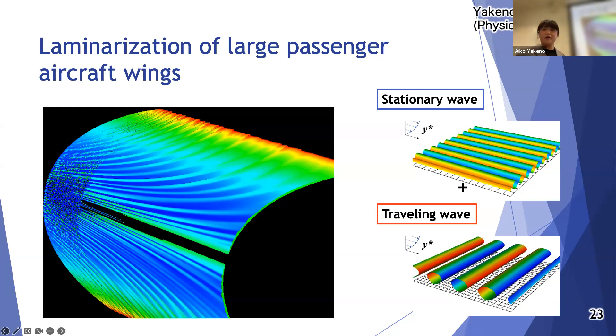We observed the generation of stationary waves that are known experimentally, but also we found some traveling waves that are the source of the transition. Furthermore, we show the possibility that the occurrence can be explained by the transient amplification process of energy. The wavelength of the structure in DNS is consistent with the maximum energy transient amplification at a finite time.